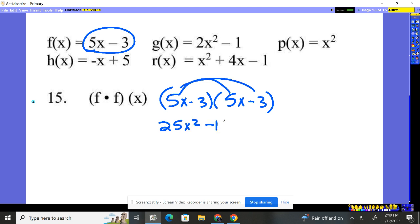5x times 3 is minus 15x. Now the negative 3 times here, minus 15x. And negative 3 times negative 3, positive 9.